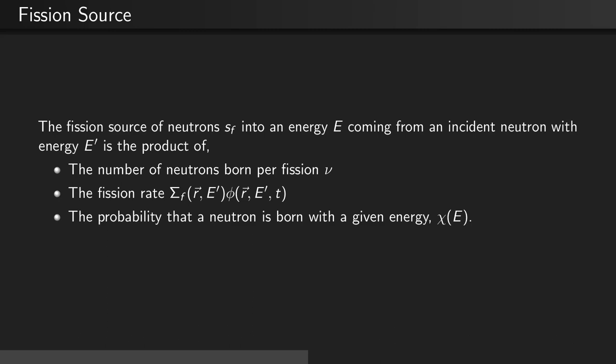The fission source of neutrons, S_f, into an energy E coming from an incident neutron with energy E' is the product of three parameters: the number of neutrons born per fission nu, the fission rate (the macroscopic fission cross-section of the incident neutron multiplied by the scalar flux of the incident neutrons), and the probability that a neutron is born with a particular energy, chi(E).